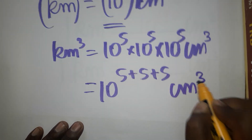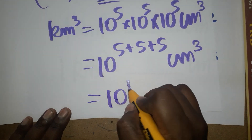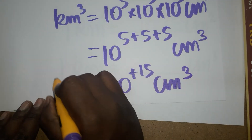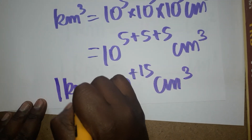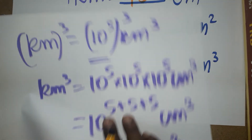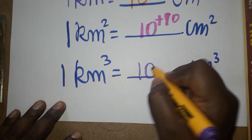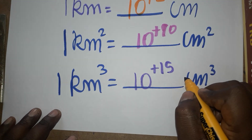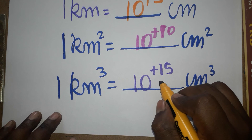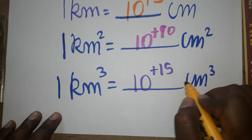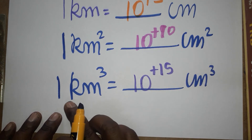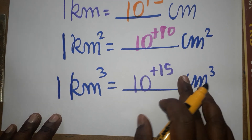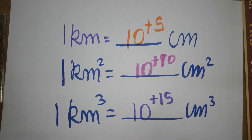That gives us 10 power 5 plus 5 plus 5, which is 10 power 15 centimeter cube. So one kilometer cube is equal to 10 power 15 centimeter cube — that means there will be 15 zeros. Thank you for watching my video.